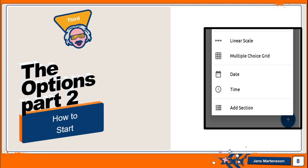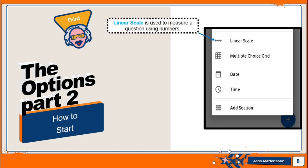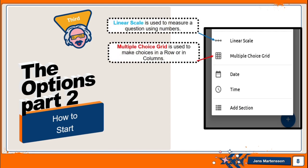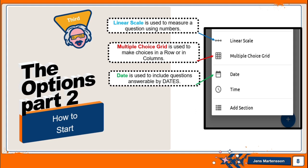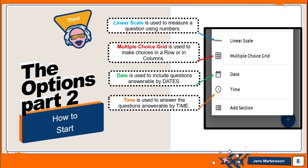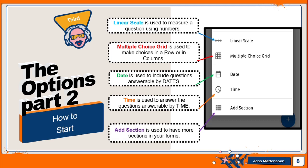Options part two: we have linear scale, multiple choice grid, date, time, and add section. Linear scale is used to measure a question using numbers. Multiple choice grid is used to make choices in rows or columns. Date is used for questions answerable by date. Time is used for questions answerable by time. Add section is used to have more sections in your form.